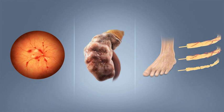In animals, diabetes is most commonly encountered in dogs and cats. Middle-aged animals are most commonly affected. Female dogs are twice as likely to be affected as males, while male cats are also more prone than females. All breeds may be affected, but some small dog breeds are particularly likely to develop diabetes, such as miniature poodles. Feline diabetes mellitus is strikingly similar to human type 2 diabetes. The Burmese breed, along with the Russian Blue, Abyssinian, and Norwegian Forest Cat breeds, showed an increased risk of DM, while several breeds showed a lower risk.